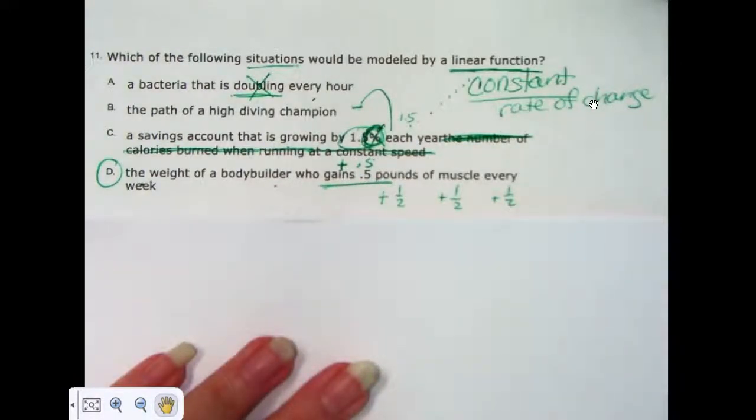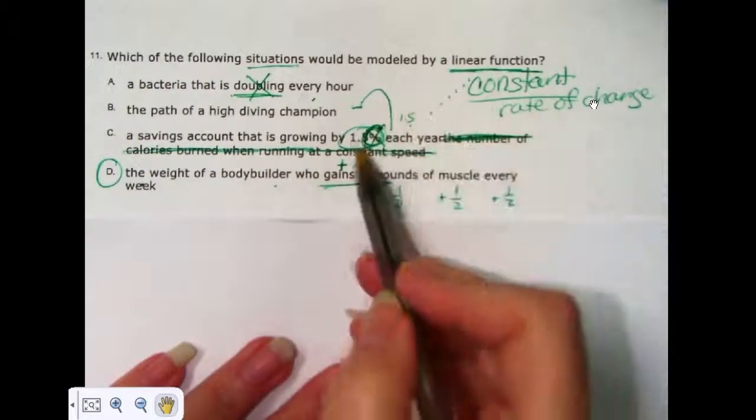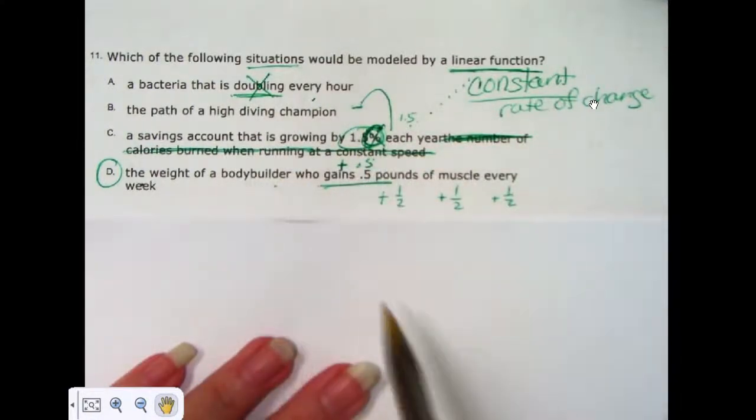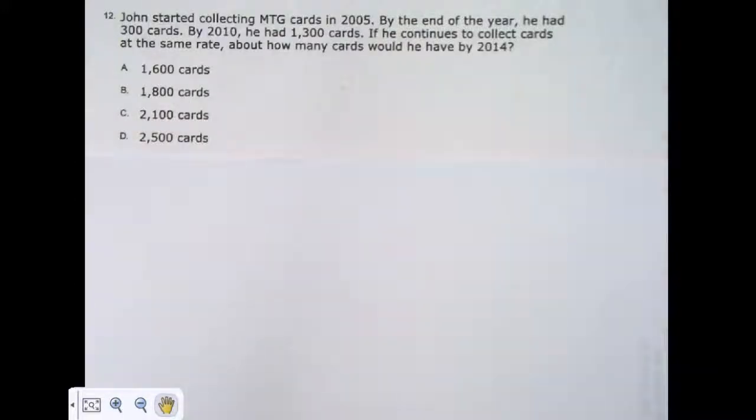That's what that is. When we have a linear function, we are adding a particular number, not some value, but we're adding or subtracting a particular number every day or every week or every hour or such. And now that's really all I have to say about that. Number 12.